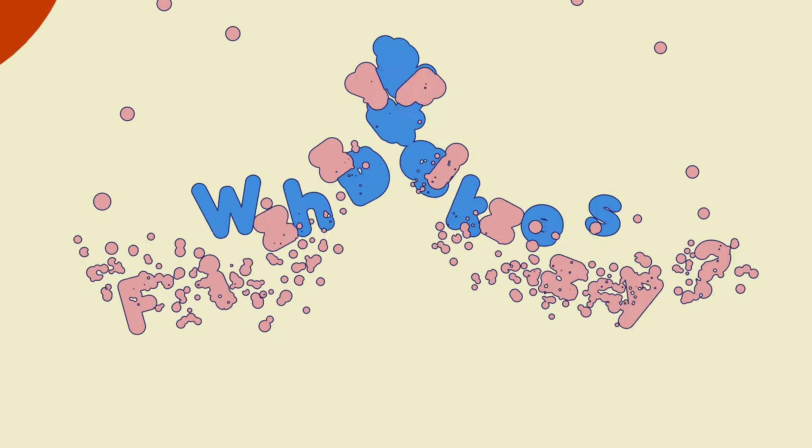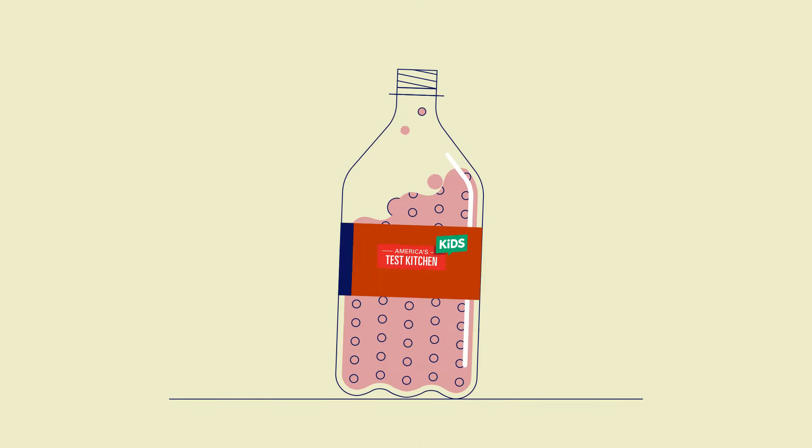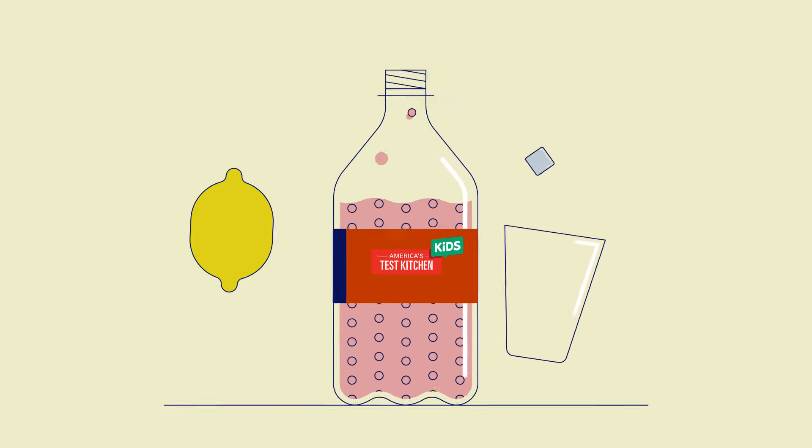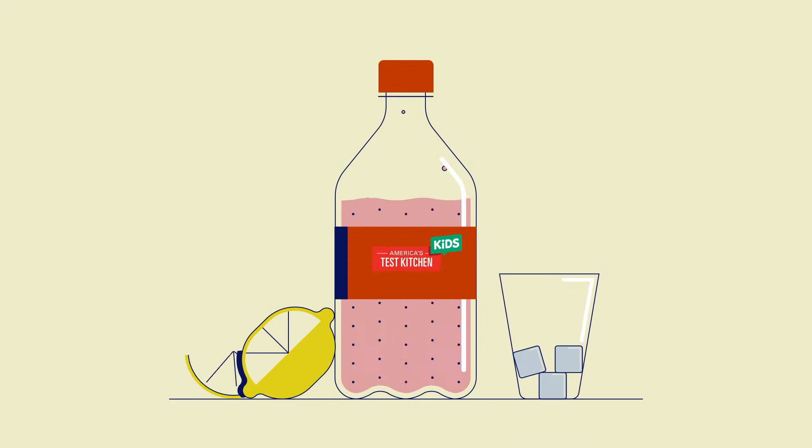The fizzy bubbles in seltzer or soda are made of carbon dioxide gas. When seltzer is sealed in a bottle, the gas is dissolved in the liquid and you can't see it.